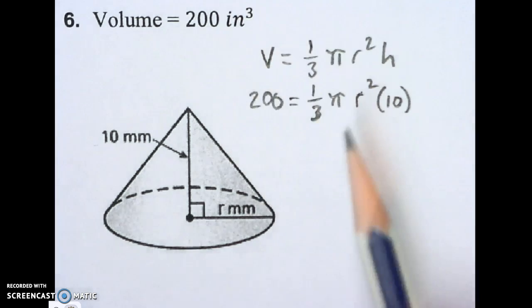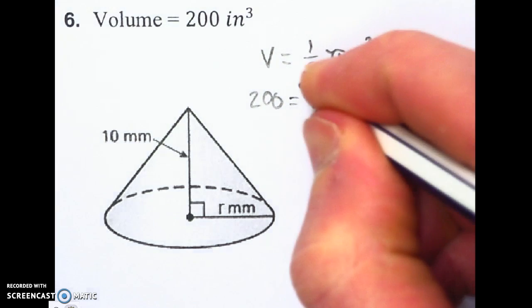Okay, first thing I'm going to do, just like solving for the height, I'm going to get rid of this one-third. I'm going to multiply each side by 3.